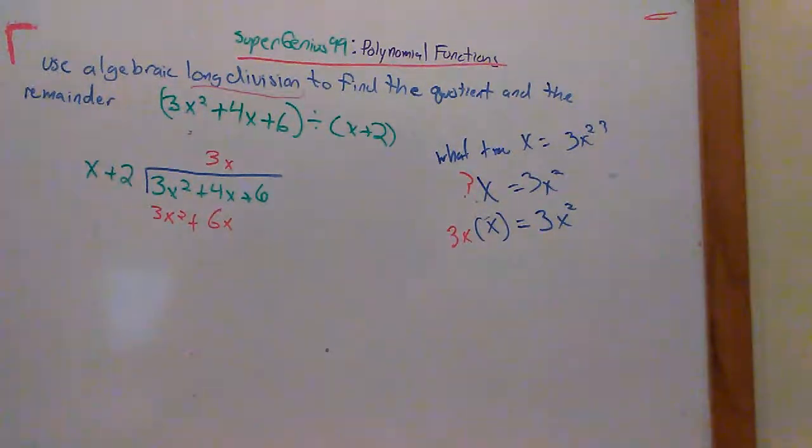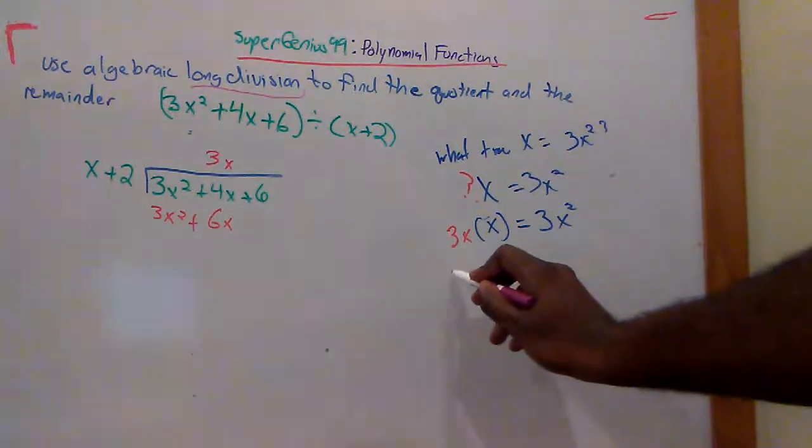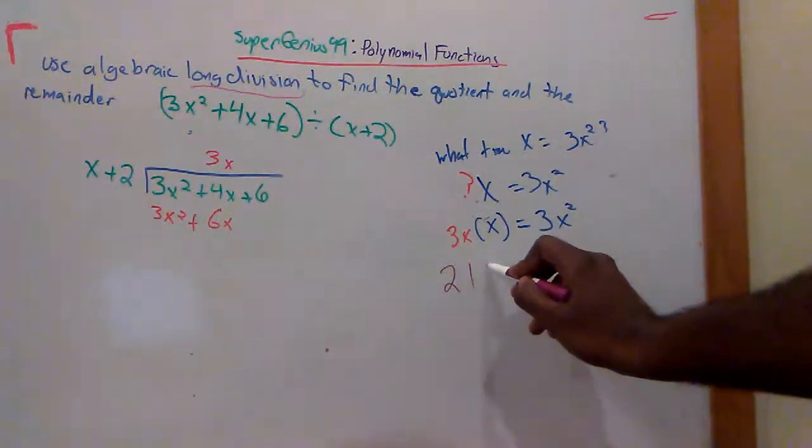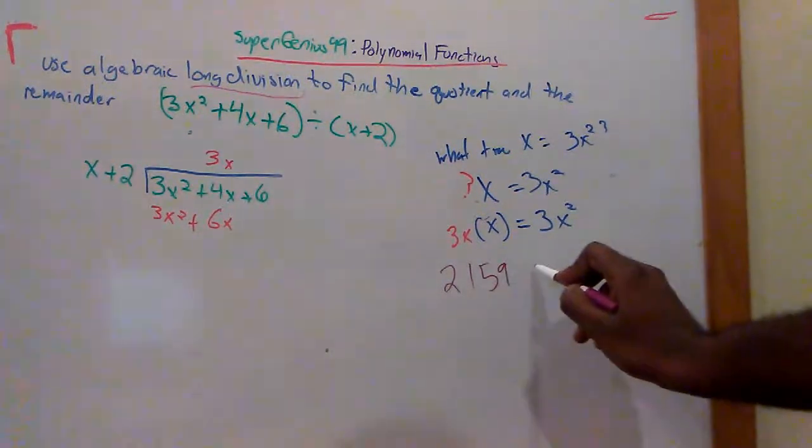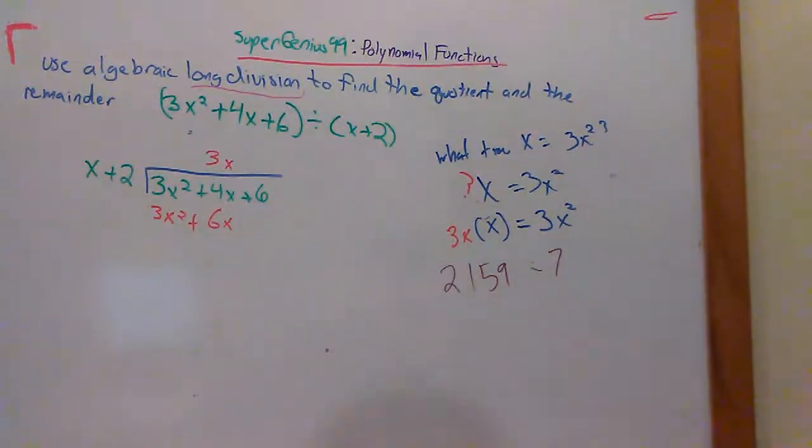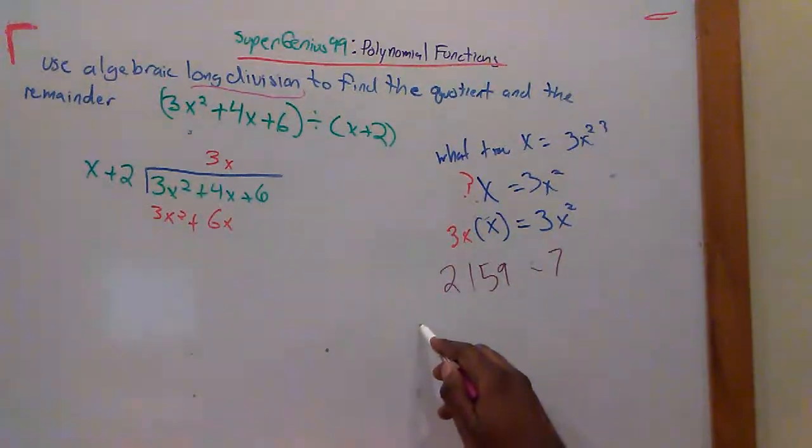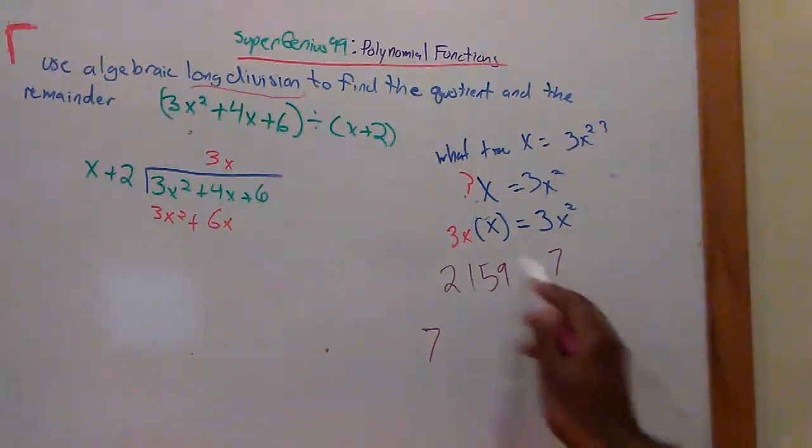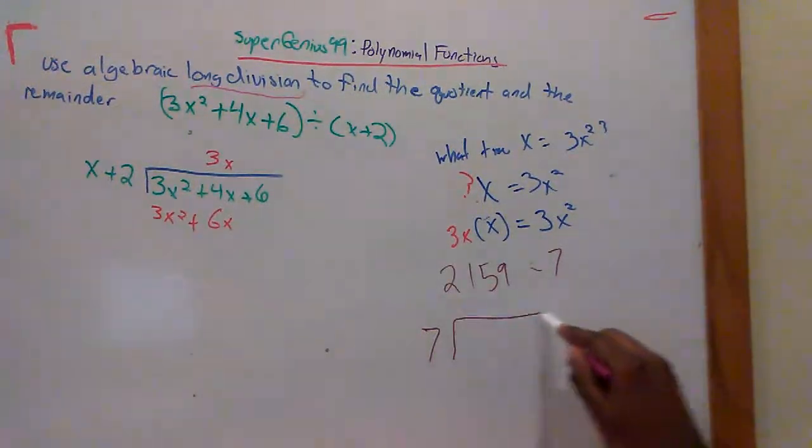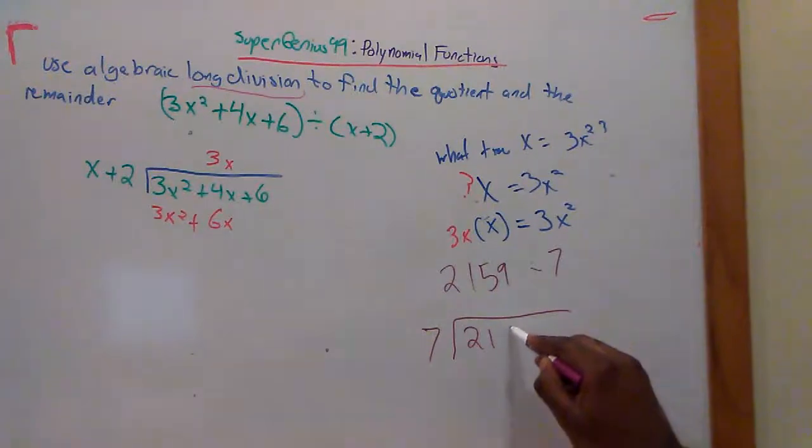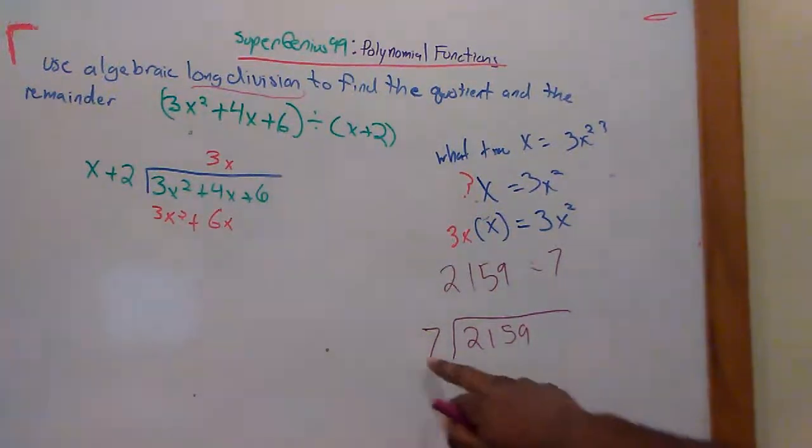And then what you do here is you subtract, just if you were doing regular division. Let me come over here to regular division. If you were to say 2,159 divided by 7, how would you set this up? Same way. You put the 7 on the outside, just like we did here. Have your little fraction bar. You put this on the inside.